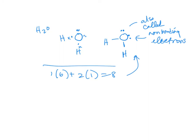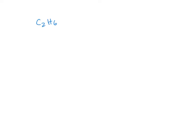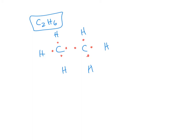For C2H6, you have two central carbon atoms. Place the hydrogens around each carbon. Each carbon has four valence electrons and each hydrogen has one, giving single bonds all the way around. This is the correct Lewis structure for ethane.